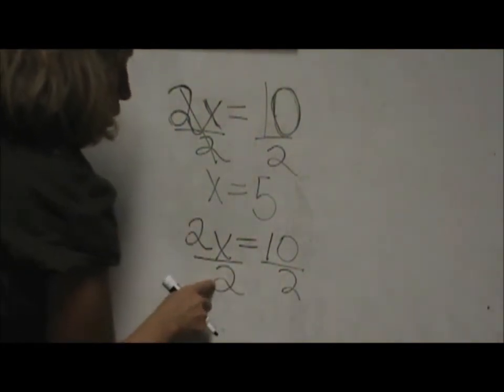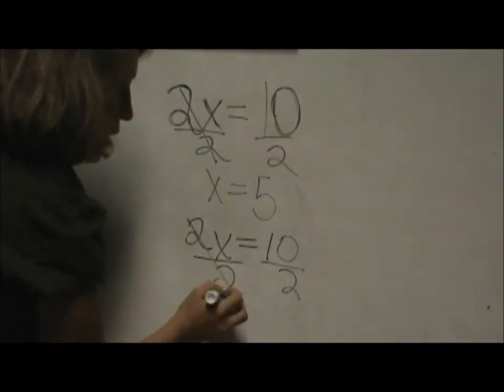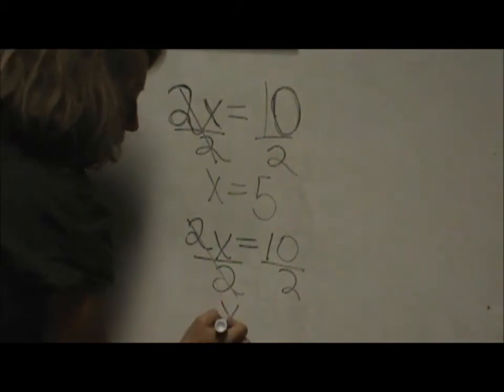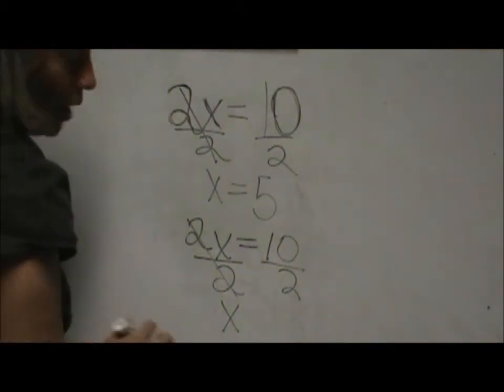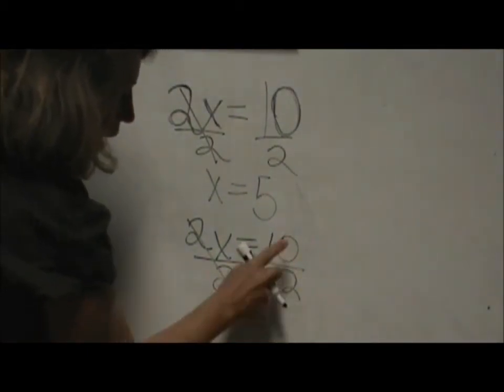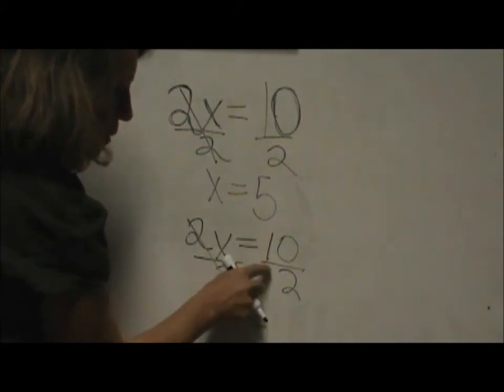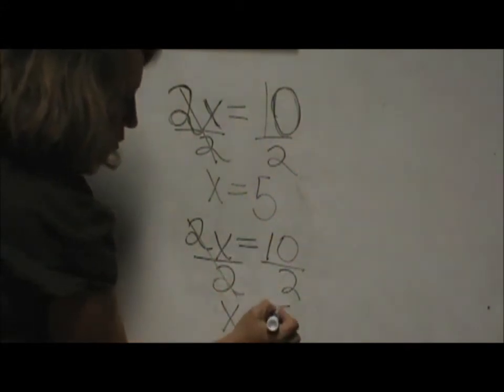So 2 divided by 2 is just 1, so those just cancel out to be 1x, but we don't write the 1. And the second half, 10 divided by 2 is equal to 5.